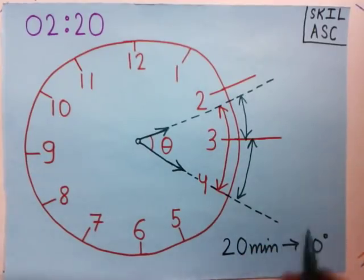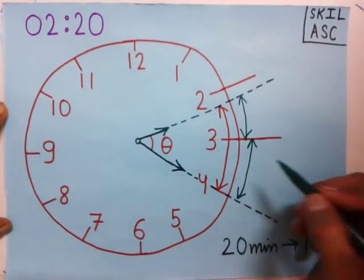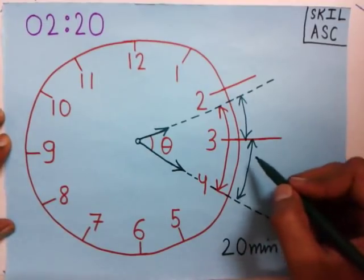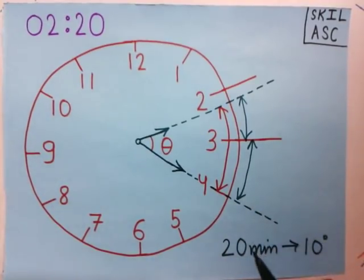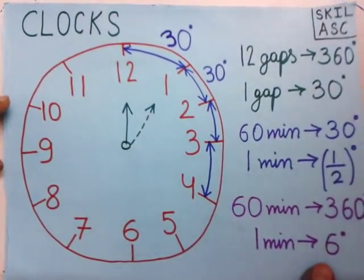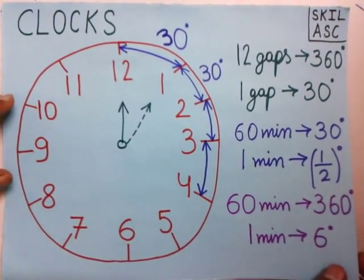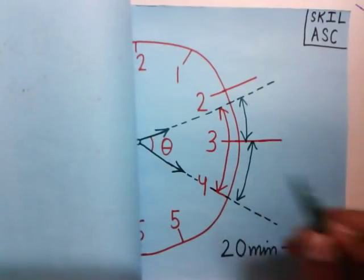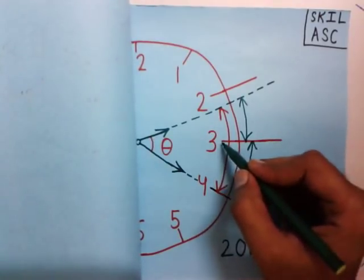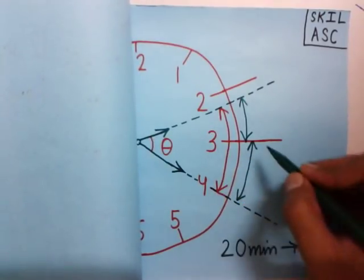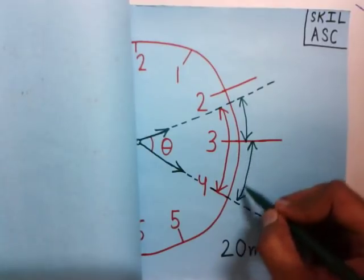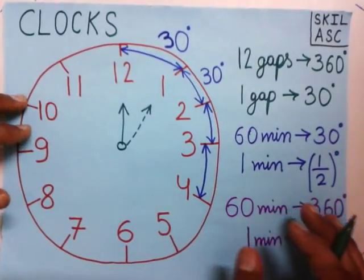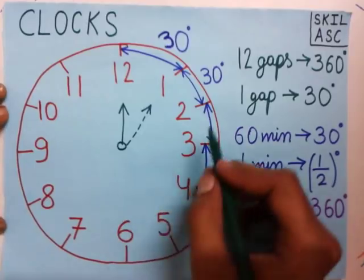To find this angle, we need to understand a concept. Suppose we have to find the angle between 3 and 4 on the clock — that is the angle from this point to this point. Let's understand this concept.